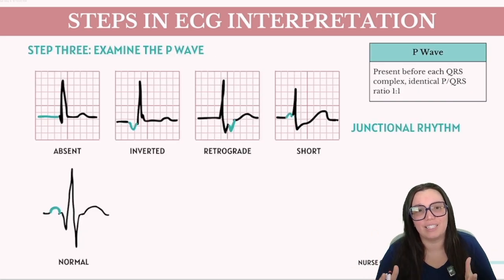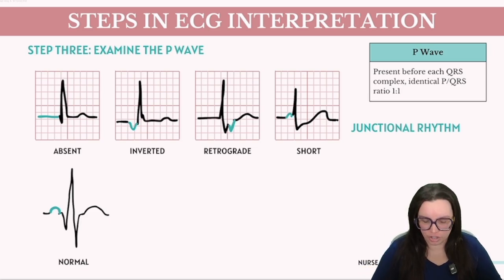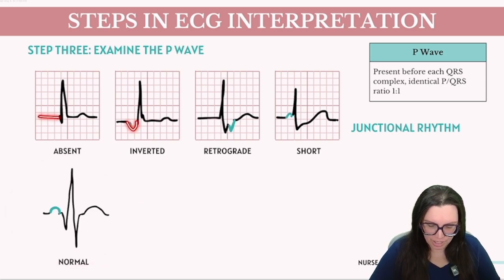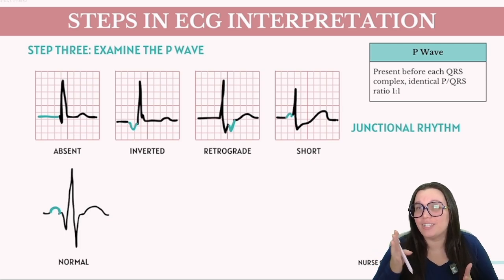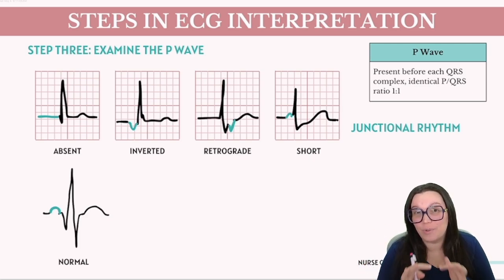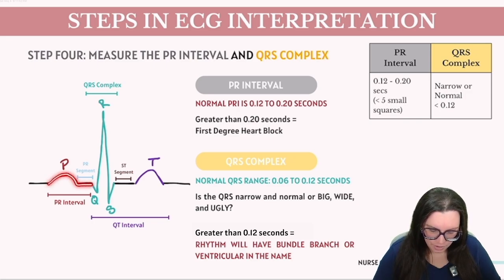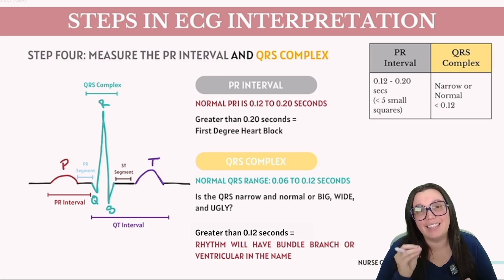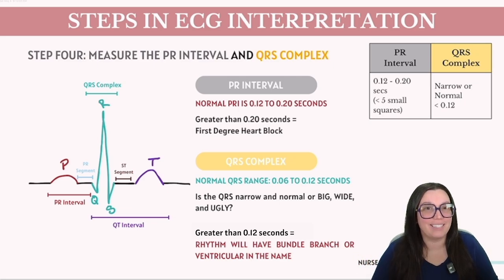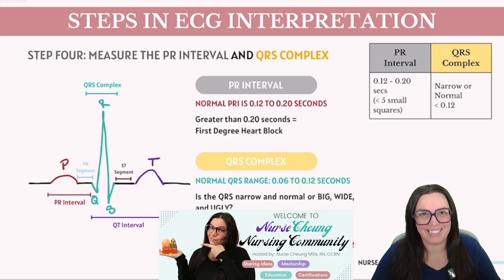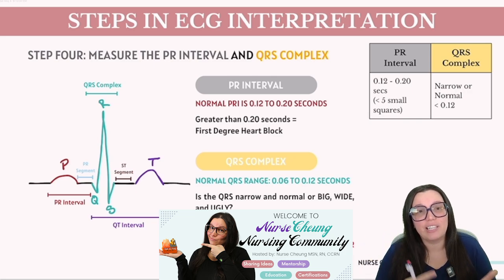Step three is identifying and scrutinizing P waves. Under normal conditions, P waves should be visible and upright. Absence, inversion, retrograde, or short P waves may suggest a junctional rhythm, indicating some irregularity in the heart's electrical activity. We also assess the PR interval, which spans from the start of the P wave to the start of the QRS complex — tallying the small boxes and multiplying by 0.04 seconds. A normal PR interval should be between 0.12 and 0.20 seconds. A PR interval exceeding 0.20 seconds may signal a dysrhythmia such as a first-degree heart block.